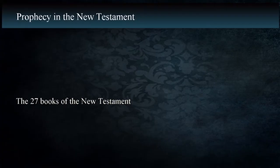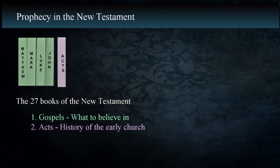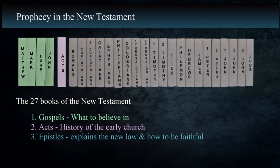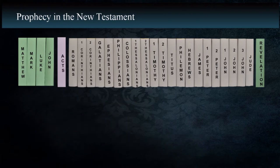The 27 books that compose the New Testament begin their narrative in the waning years of the Law of Moses. The content of the New Testament is made up of the Gospels that tell us what to believe in, the Book of Acts which records the history of the early church, the Epistles explaining the New Law and how to remain faithful, and the Book of Revelation, an epistle to seven churches in Asia, that encourages faithfulness and warns against apostasy.